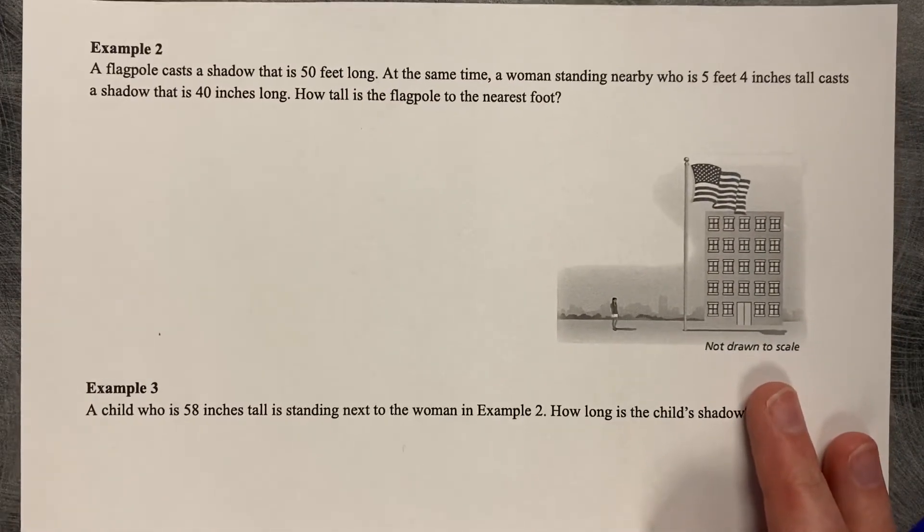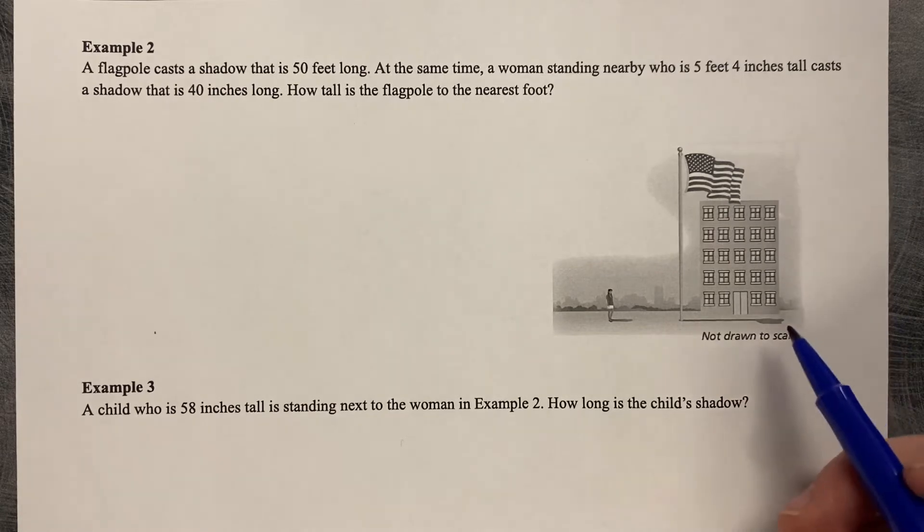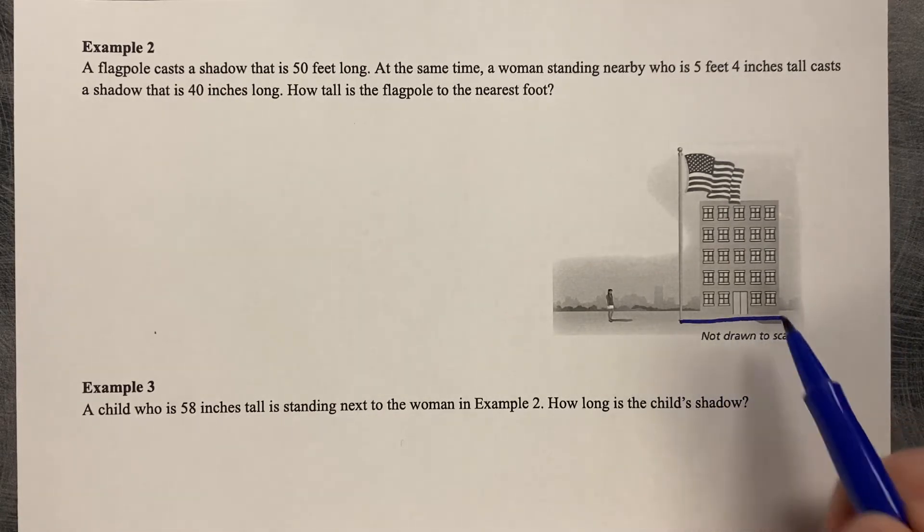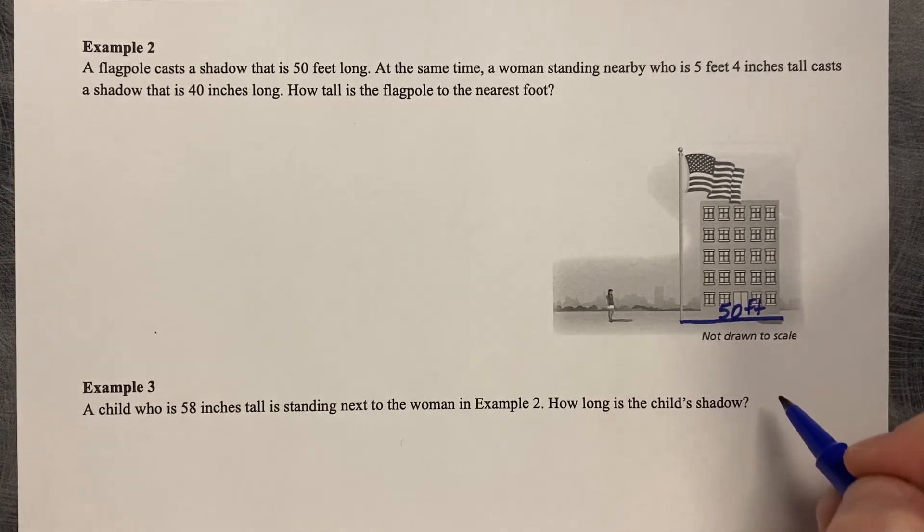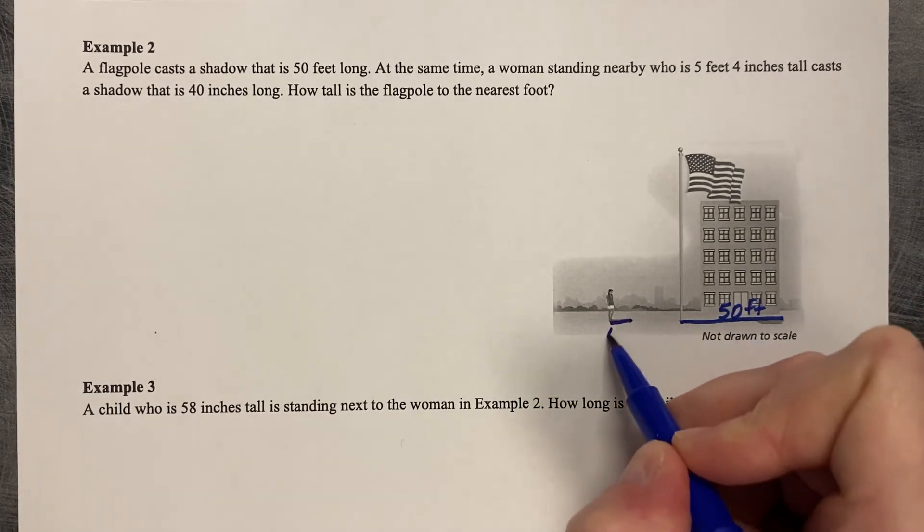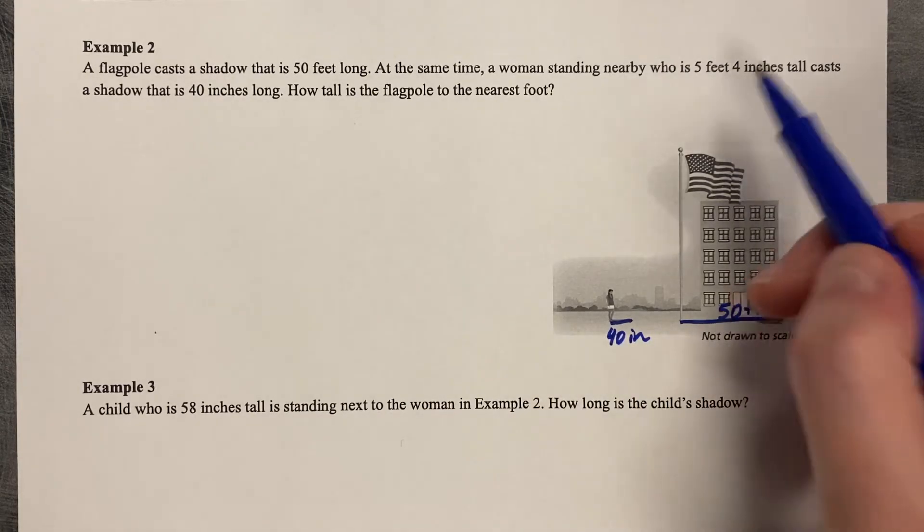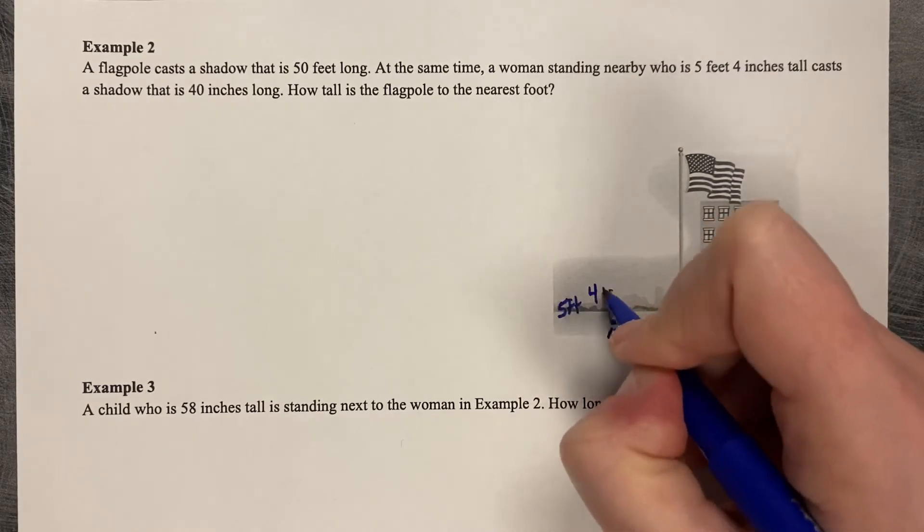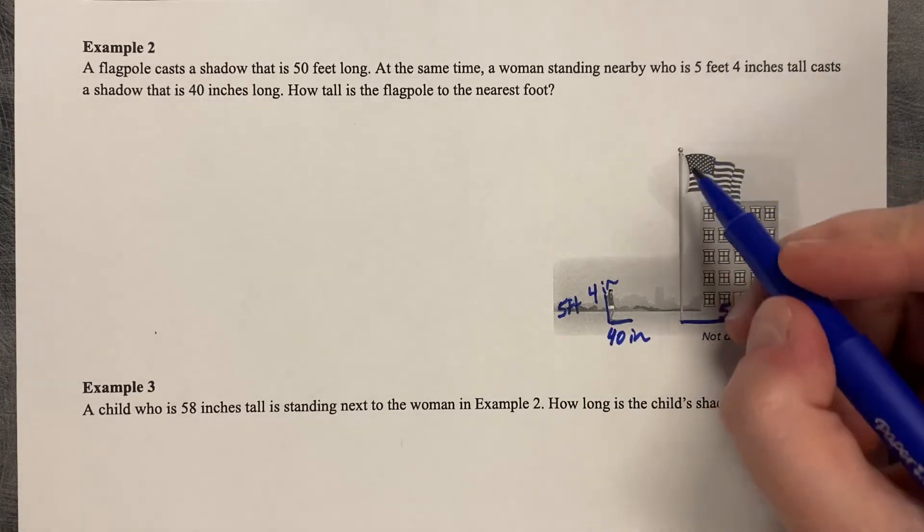So now we're going to start using our knowledge of similar angles to help us solve problems. So example number two, a flagpole casts a shadow that is 50 feet long. So if I draw right on this picture here, we're saying that this is 50 feet long. At the same time, a woman standing nearby who is 5 feet 4 inches tall casts a shadow that is 40 inches long. So how tall is the flagpole? And the woman is 5 feet 4 inches tall. And then we want to know how tall is the flagpole.